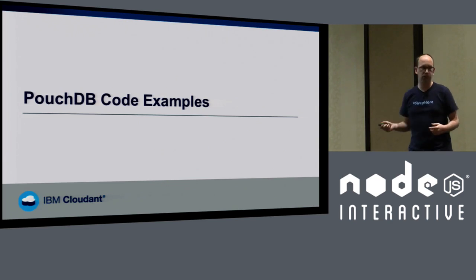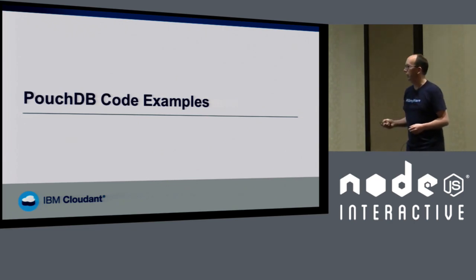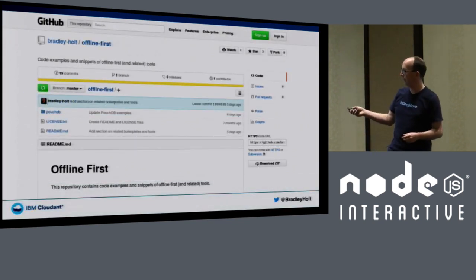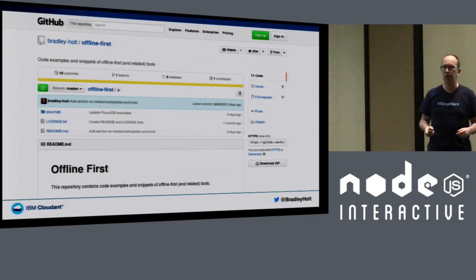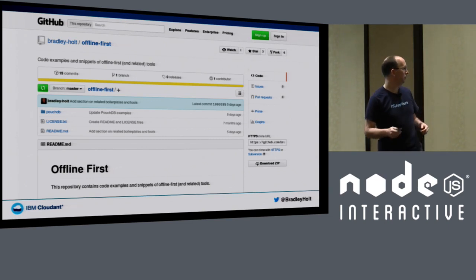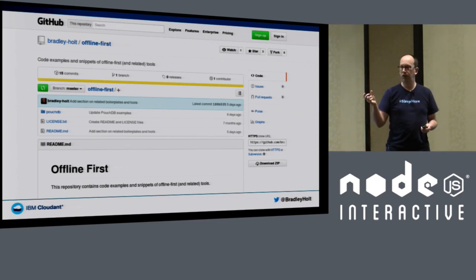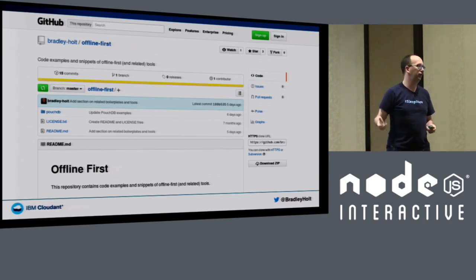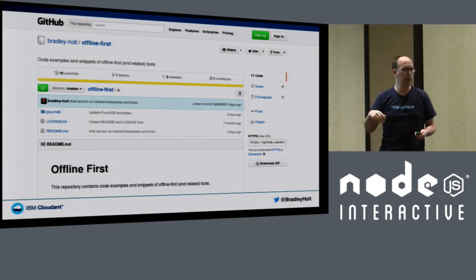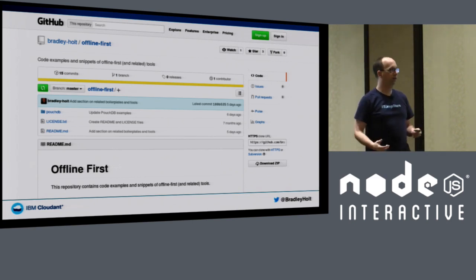It's a pretty short time slot so I don't have a ton of time to go over code examples — I'll go through them quickly. If you want to check this out in more depth, see the GitHub repo at bradley-holt/offline-first on GitHub. The examples on the slides are condensed, but the full examples are on GitHub. I've also created a JSFiddle for each example so you can run them in your browser. Scrolling further down the page, there are links to boilerplates and tools for all the different use cases I just talked about.